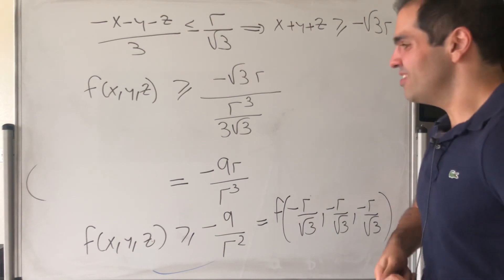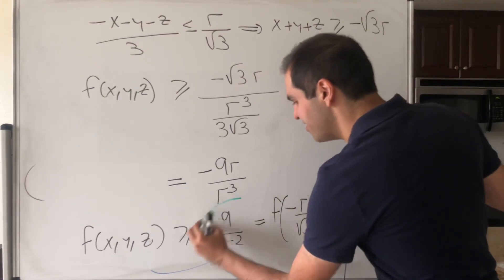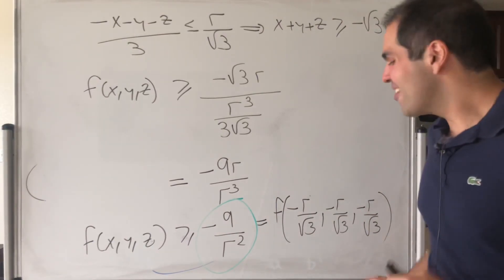So, in fact, the question is, what was the minimum of f? Well, the minimum is precisely minus 9 over r squared. How cool is that?